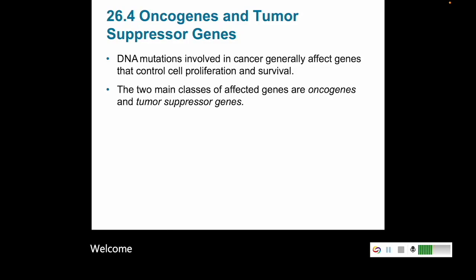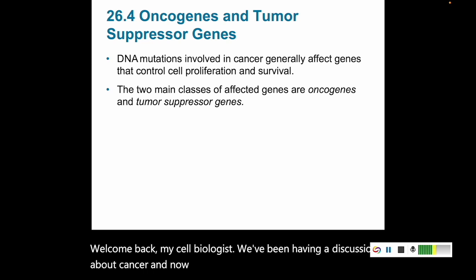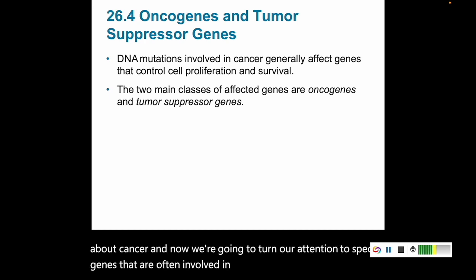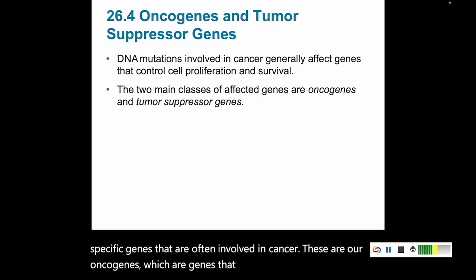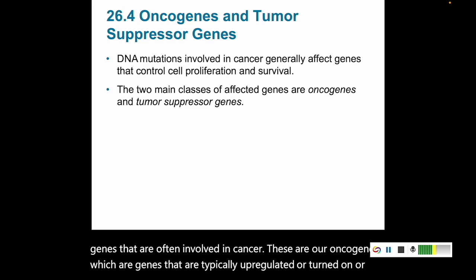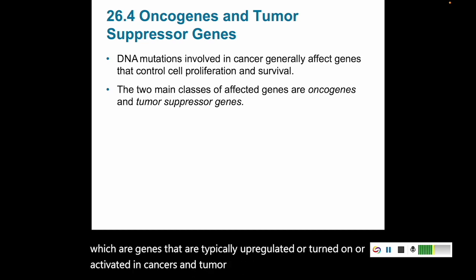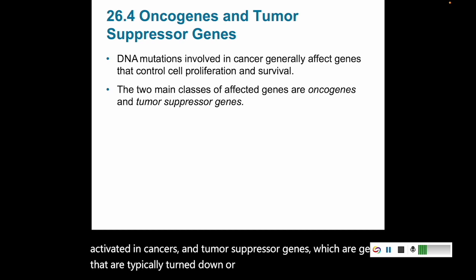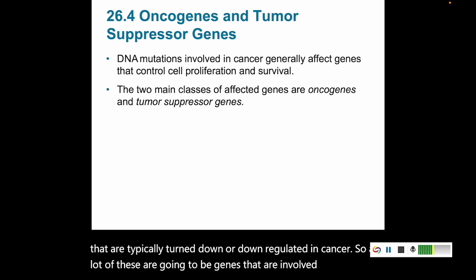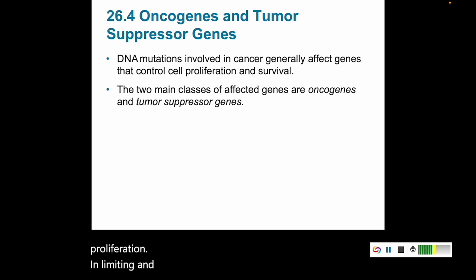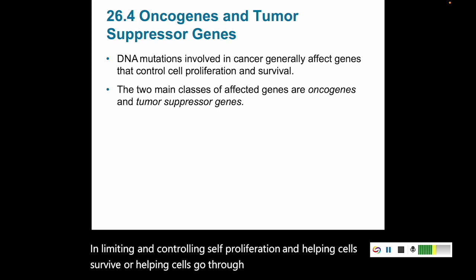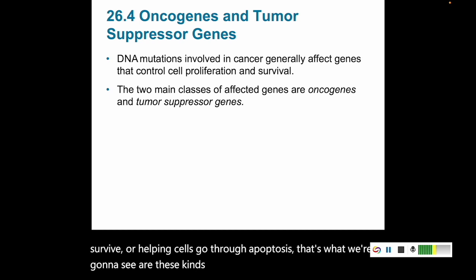Welcome back, cell biologists. We've been having a discussion about cancer, and now we're going to turn our attention to specific genes that are often involved in cancer. These are our oncogenes, which are genes that are typically upregulated or activated in cancers, and tumor suppressor genes, which are genes that are typically downregulated in cancer. A lot of these are going to be genes involved in cell proliferation, limiting and controlling cell proliferation, and helping cells survive or go through apoptosis.